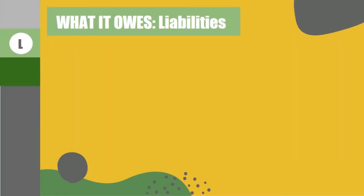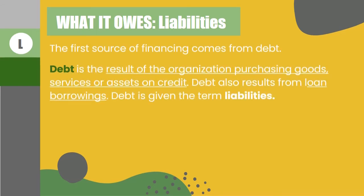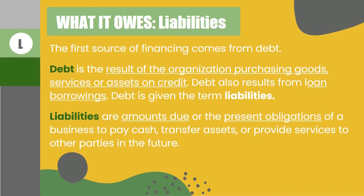Moving on to the first part of the second element — what it owes, or liabilities. The first source of financing comes from debt. It is the result of the organization purchasing goods, services, or assets on credit. Debt also results from loan borrowings. Liabilities are amounts due or the present obligations of a business to pay cash, transfer assets, or provide services to other parties in the future. So liabilities are yung mga pagkakautang natin na ginamit upang magkaroon ng financing sa operasyon ng ating business, katulad ng mga banko at suppliers.